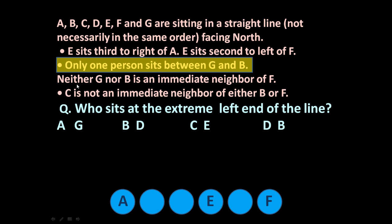Next statement: neither G nor B is an immediate neighbour of F. So G and B cannot occupy the positions immediately beside F — they cannot be neighbours of F in any case.